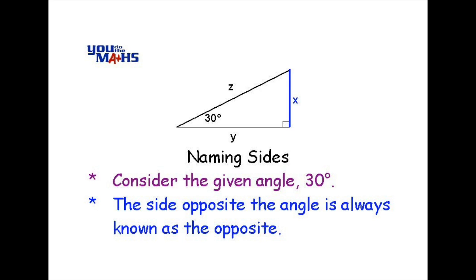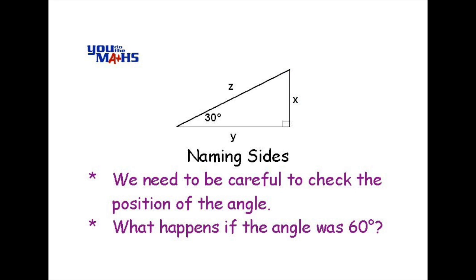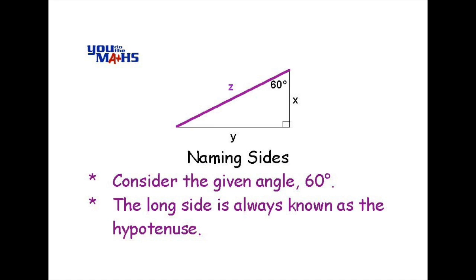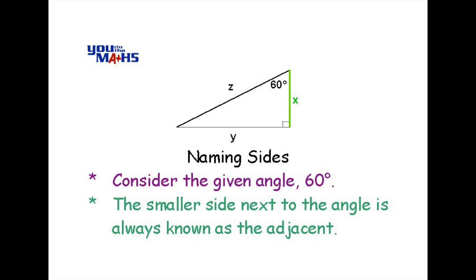Now, what happens if that 30-degree angle wasn't given and instead we had a 60-degree angle in the top right-hand corner? That would probably change the name of the sides. Well, it doesn't affect the hypotenuse — the hypotenuse is always the longest side of a right-angled triangle, still the one marked with Z. The side called adjacent is now the side with the X on it, marked here in green, because that's the one now next to the angle.